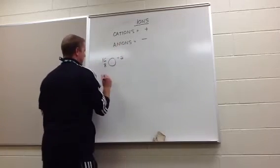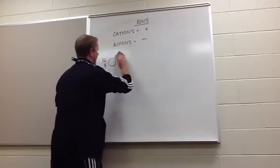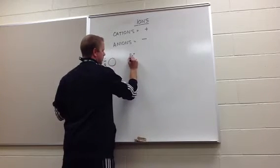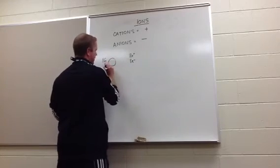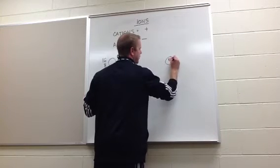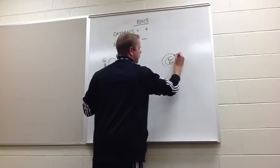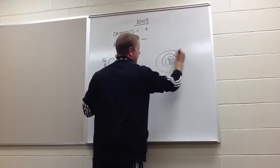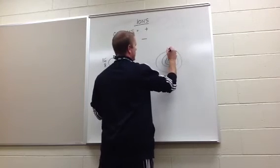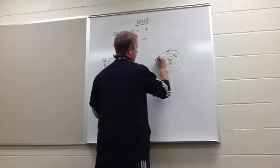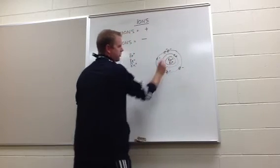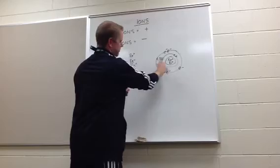Normally, oxygen would have 8 protons, 8 electrons — because it's not charged right now — and 16 minus 8 gives 8 neutrons. You draw the Bohr model: 8 protons, 8 neutrons in the nucleus, 2 electrons in the first shell, and then 6 more in the second shell.